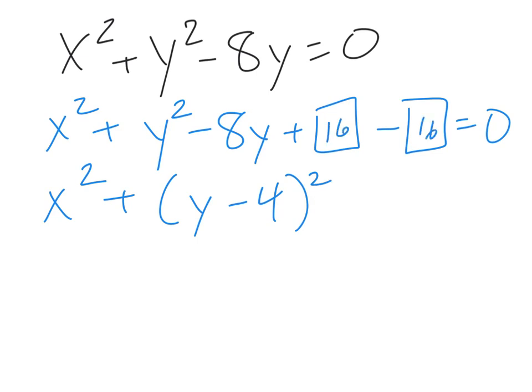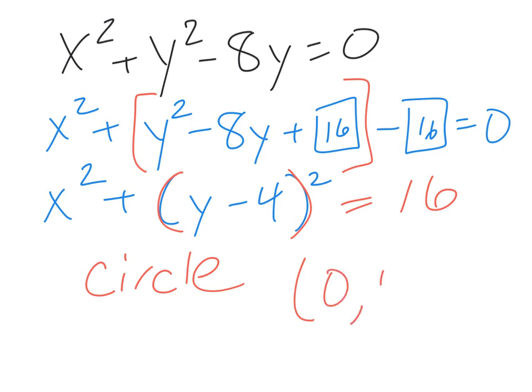This gives me x squared plus y minus 4, 4 squared is 16 and 16. I can go ahead and move this, this was all factored down to this right here, but then let's move the 16 to the other side that equals 16. What this gives you is you've got a circle here, hopefully you remember this from our study of conics with the center 0, 4 and a radius of 4.